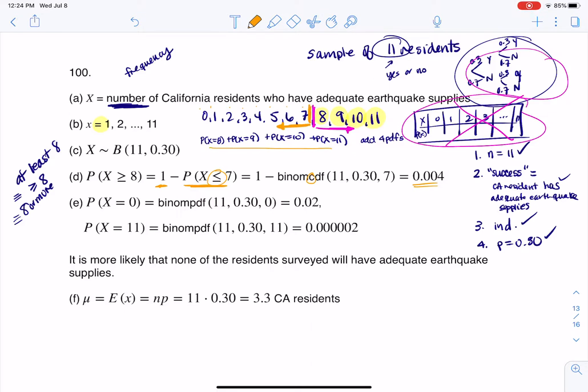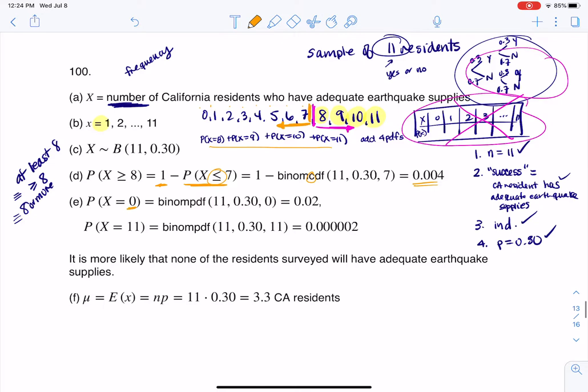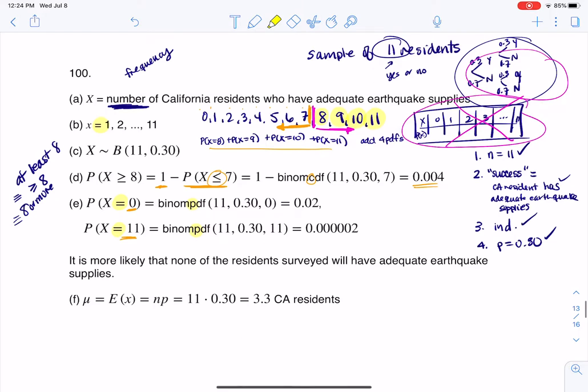Part E says, is it more likely that none or that all of the residents surveyed will have adequate earthquake supplies? So if it's none, that means I want zero having adequate earthquake supplies. If it's all, I want 11 having adequate earthquake supplies. So because we have the equal sign here, I'm going to use binomial PDF. And I crunched it for zero and 11, and I found it was 2% versus 0.0002%. So you can see it's more likely that none of the residents surveyed will have adequate earthquake supplies.